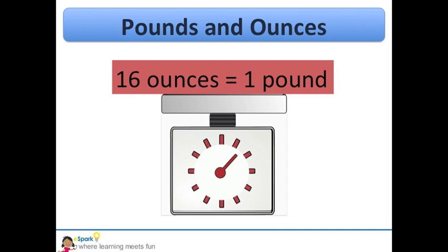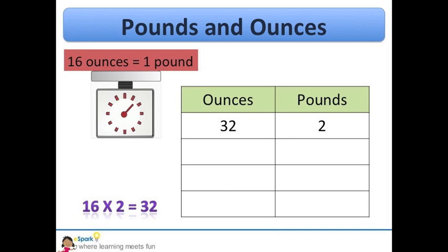There are 16 ounces in one pound. And now here's my table. And we've got the first row complete. I know that if I have two pounds, that is the same as 32 ounces because 16 times 2 equals 32.